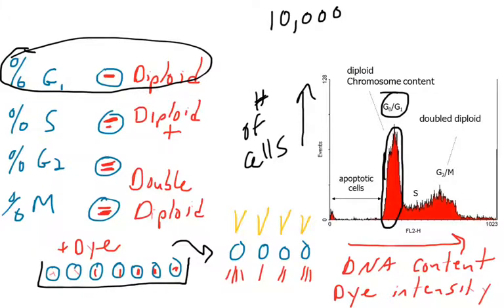It's also G0 because you're not actually sure if these cells are dividing or they have differentiated. But typically, we're talking about cells that are dividing in a dish, and so you would say that they're in G1.